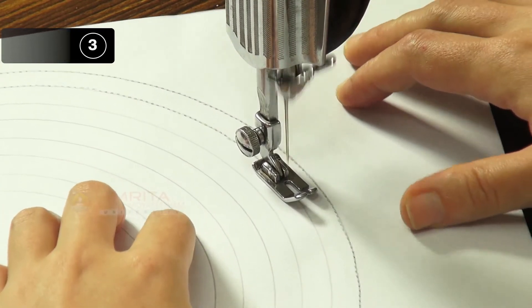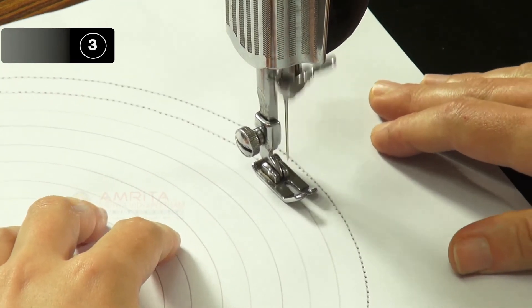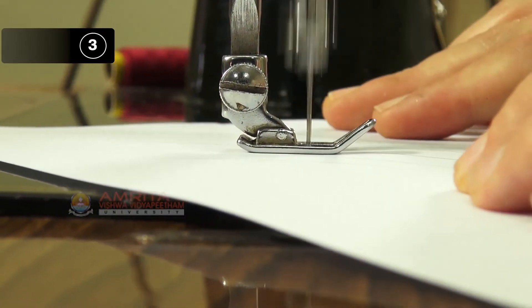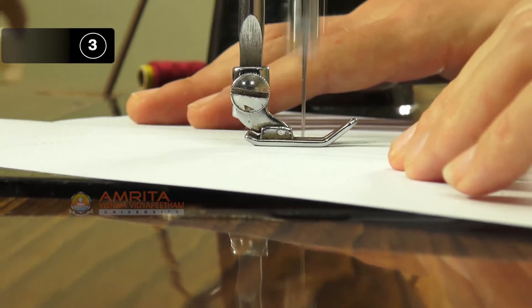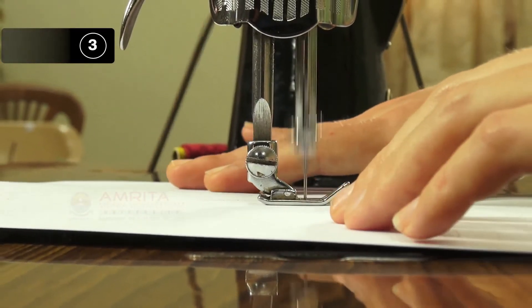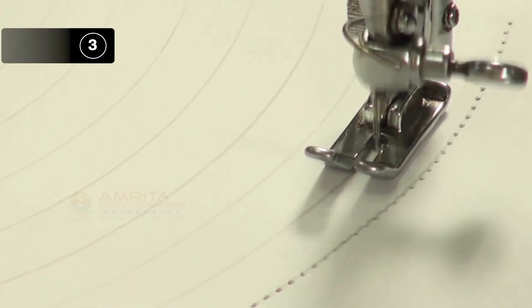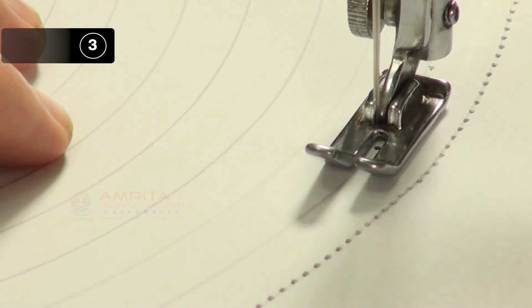With the movement of the machine, the feed dog will automatically transport the paper. But you have to pay attention on the needle and presser foot to maintain the correct line of the stitches.